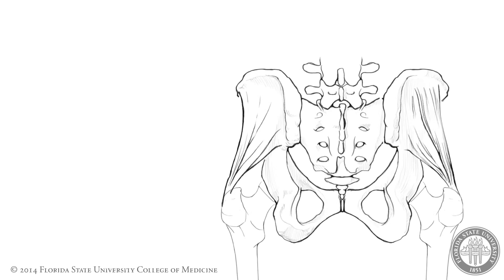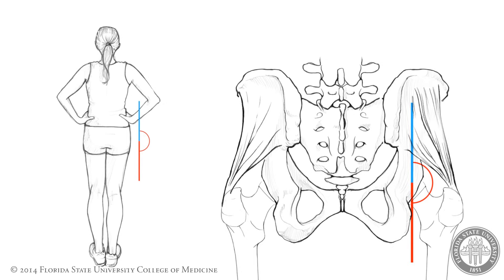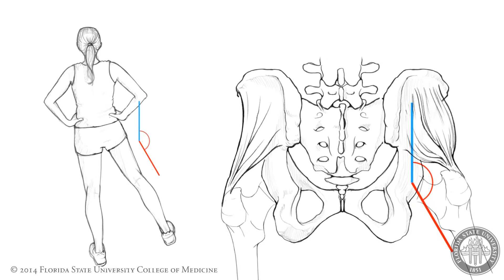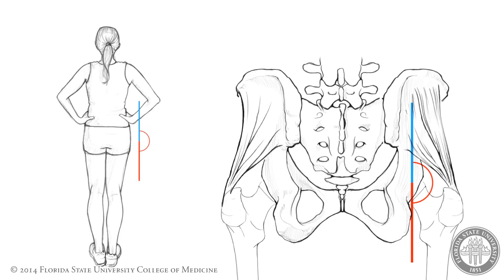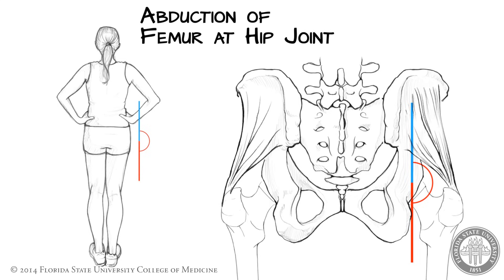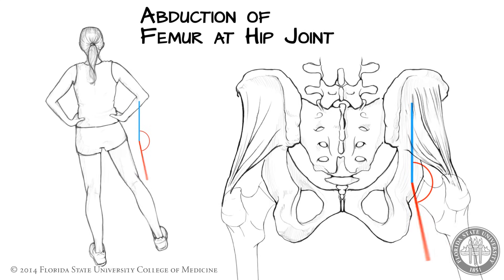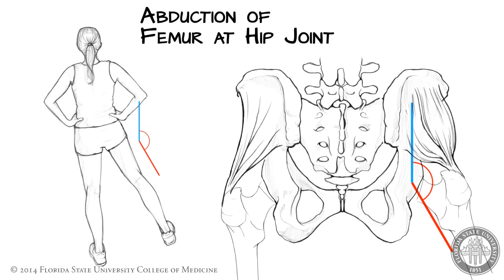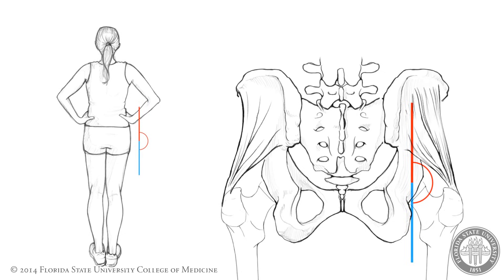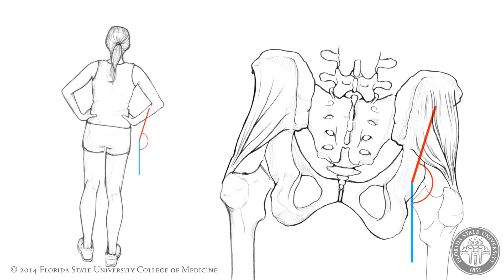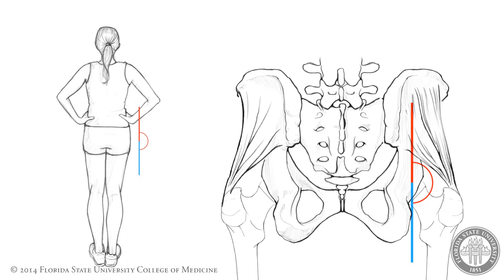Hip abduction is the responsibility of gluteus medius and gluteus minimus, both of which are attached proximally to the pelvis and distally to the femur. Typically, hip abduction is visualized as raising the lower limb away from the body in a lateral direction, thereby making the angle between the thigh and torso more acute. During this movement — abduction of the femur at the hip joint — the pelvis remains fixed while the femur is pulled laterally. However, we can also achieve hip abduction in the opposite direction by tilting the pelvis laterally, which can be described as abduction of the pelvis at the hip joint.